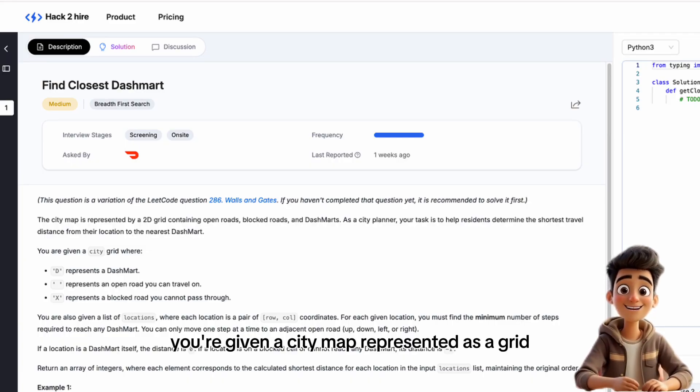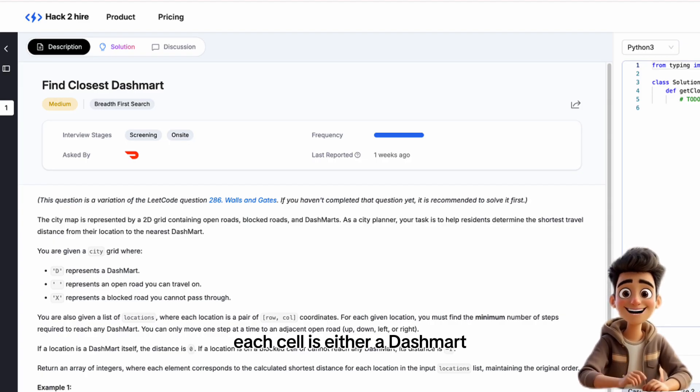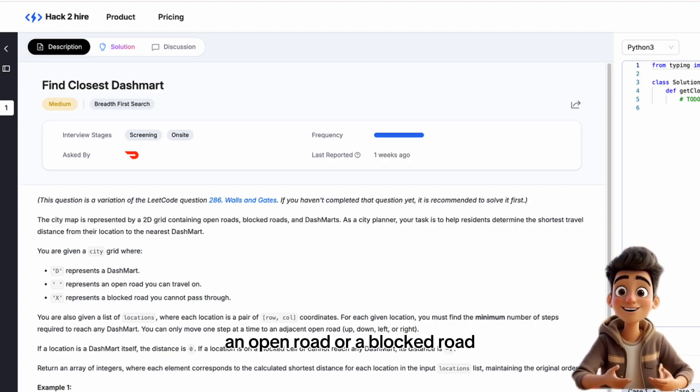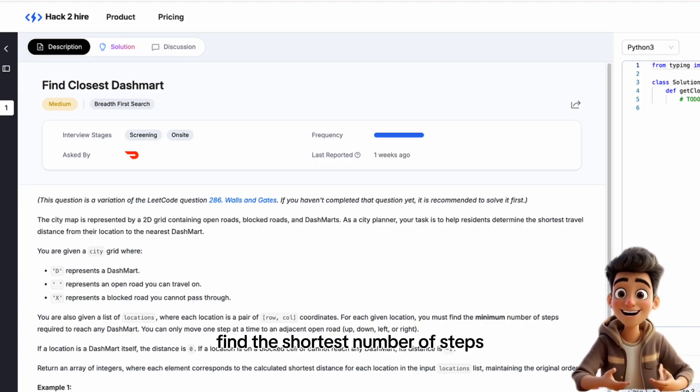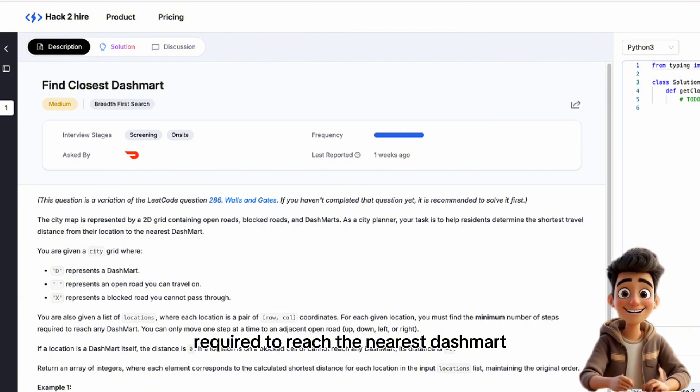You're given a city map represented as a grid. Each cell is either a dashmart, an open road, or a blocked road. Your task is, for a list of given locations, find the shortest number of steps required to reach the nearest dashmart.